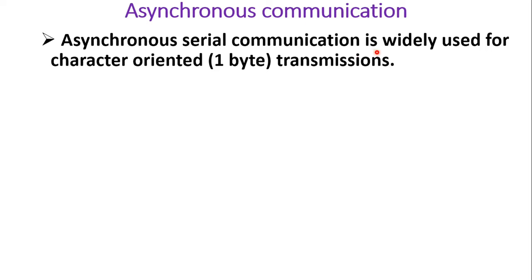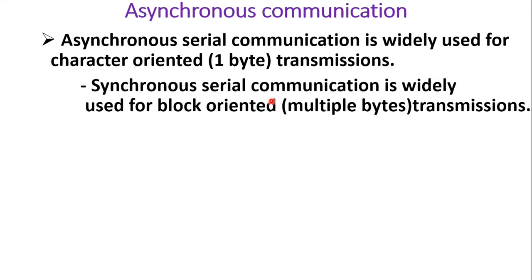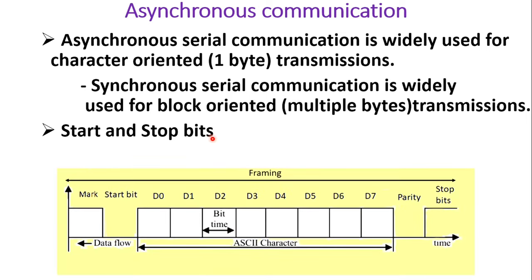Asynchronous serial communication is widely used for character-oriented or single-byte transmission. To perform asynchronous serial communication, we include a start bit at the beginning and a stop bit at the end of the data byte. When nothing is transmitted on the line, it is considered a mark — mark is represented as logic 1 and space is represented as logic 0 in serial communication.